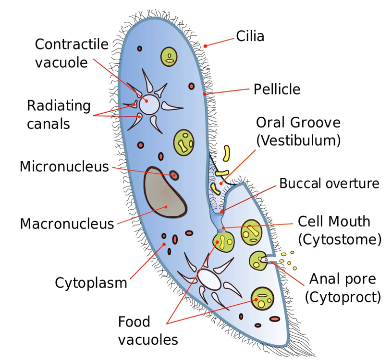The rest of the invagination is classified as the cytopharynx. The cytopharynx works in conjunction with the cytostome in order to import macromolecules into the cell. This strong association is often called the cytostome-cytopharynx complex or the cytopharyngeal apparatus.